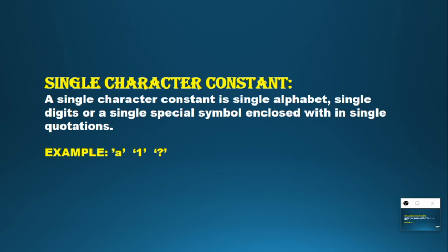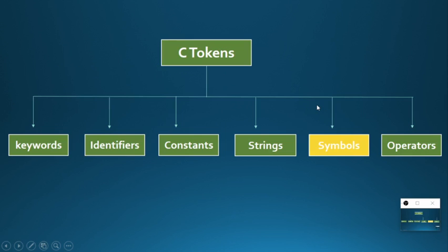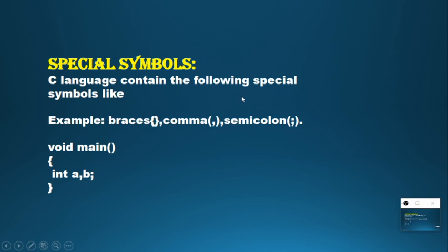Coming to character constants: the first type is single character constant, which is a single alphabet, number, or symbol enclosed in single quotations — for example 'a', '1', or '?'. A number in single quotes acts as a character and cannot be used for calculations. The next type is string constant, which is a sequence of characters enclosed in double quotations. Character uses single quotation; string uses double quotation.